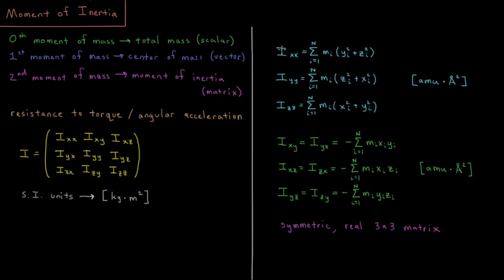For our diagonal elements, we take a sum over all the atoms of the atom's mass times its distance from that axis. Distance squared from the x axis would be y coordinate squared plus z coordinate squared. Distance squared from the y axis would be z plus x each squared. And distance from z axis, x squared plus y squared.